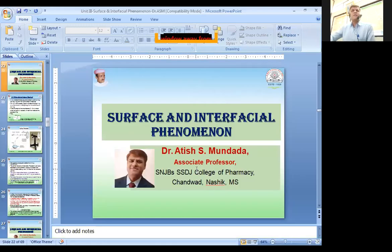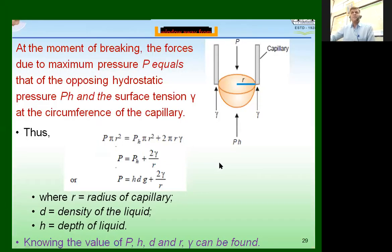We can put it in equation as P π r², where P is the pressure which has been applied by us and π r² is the area which was available for us for applying that pressure through capillary. When it becomes equal to the hydrostatic pressure which was working along the cross sectional area of the capillary that is π r² plus the surface tension of the liquid which was counter balancing this applied pressure along the circumference of the capillary. So, it becomes 2πrγ.